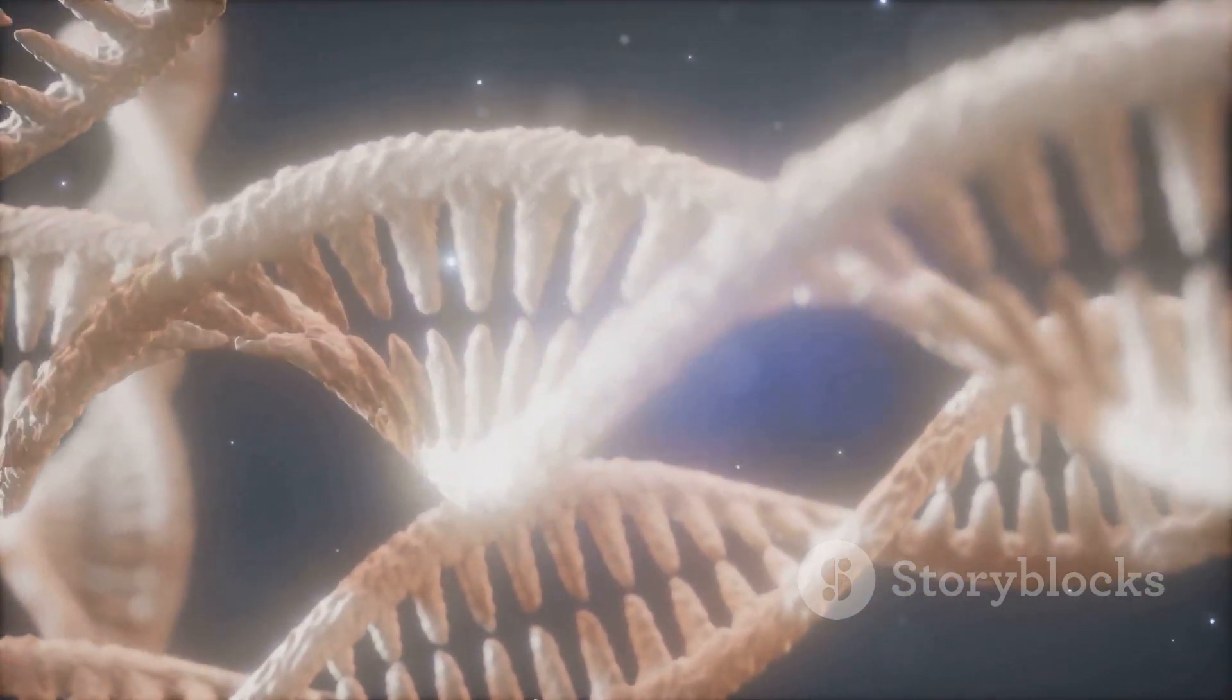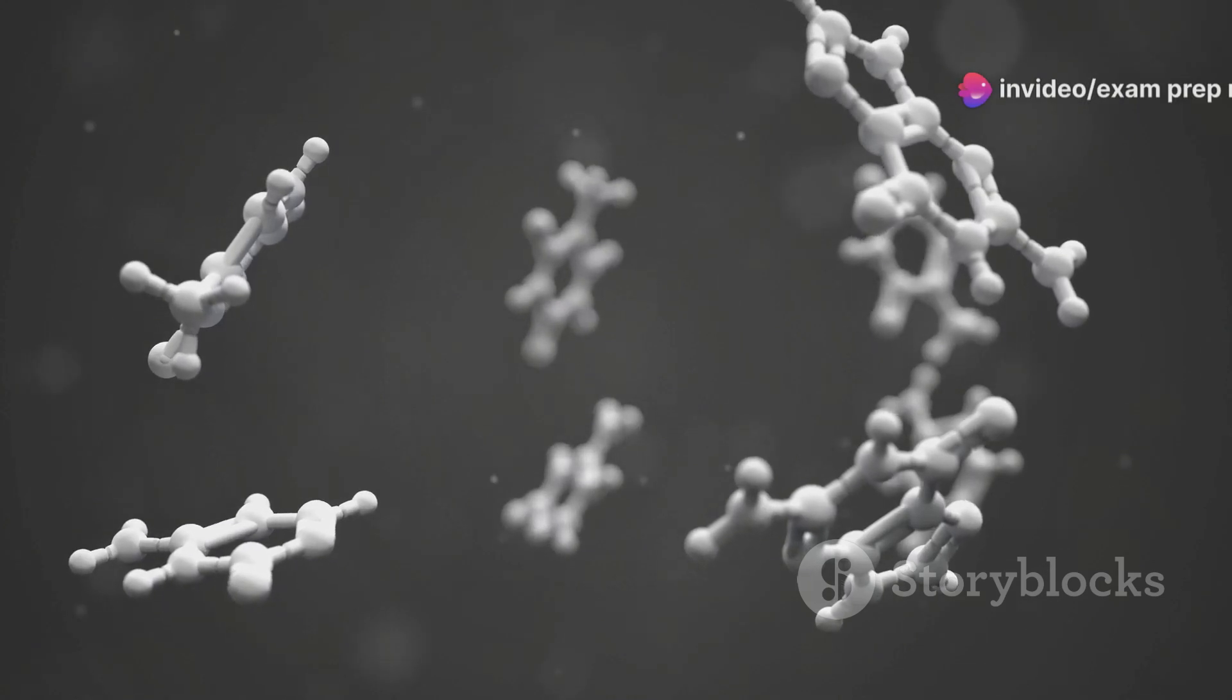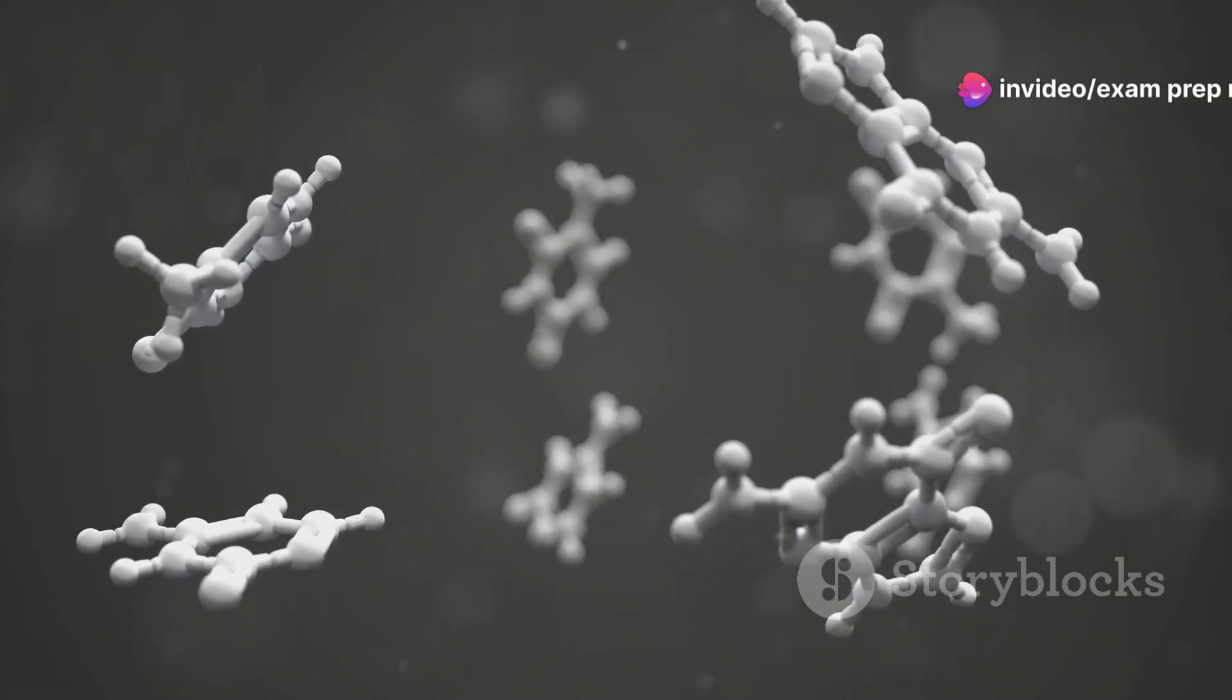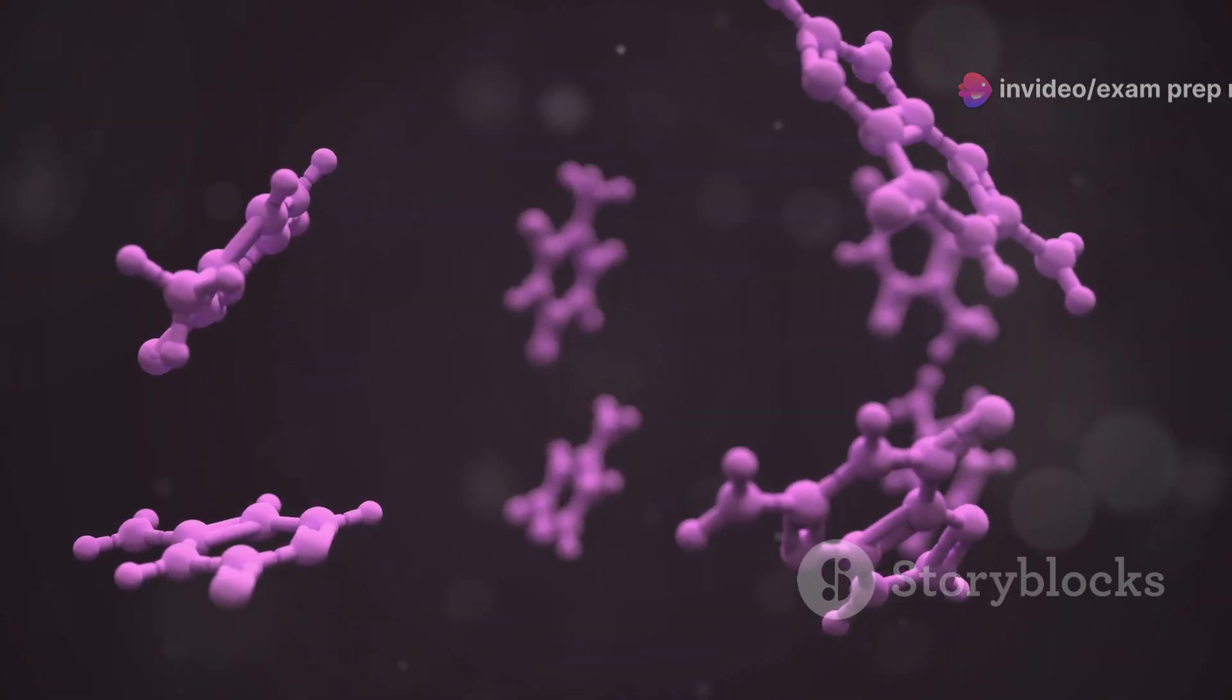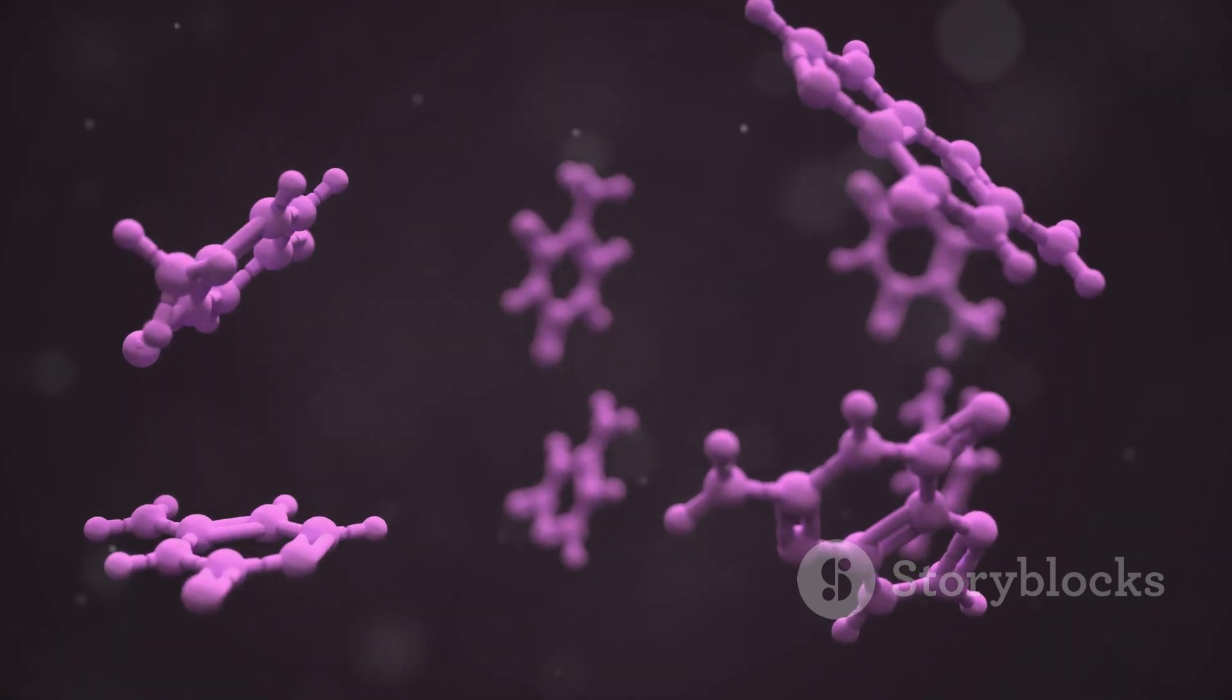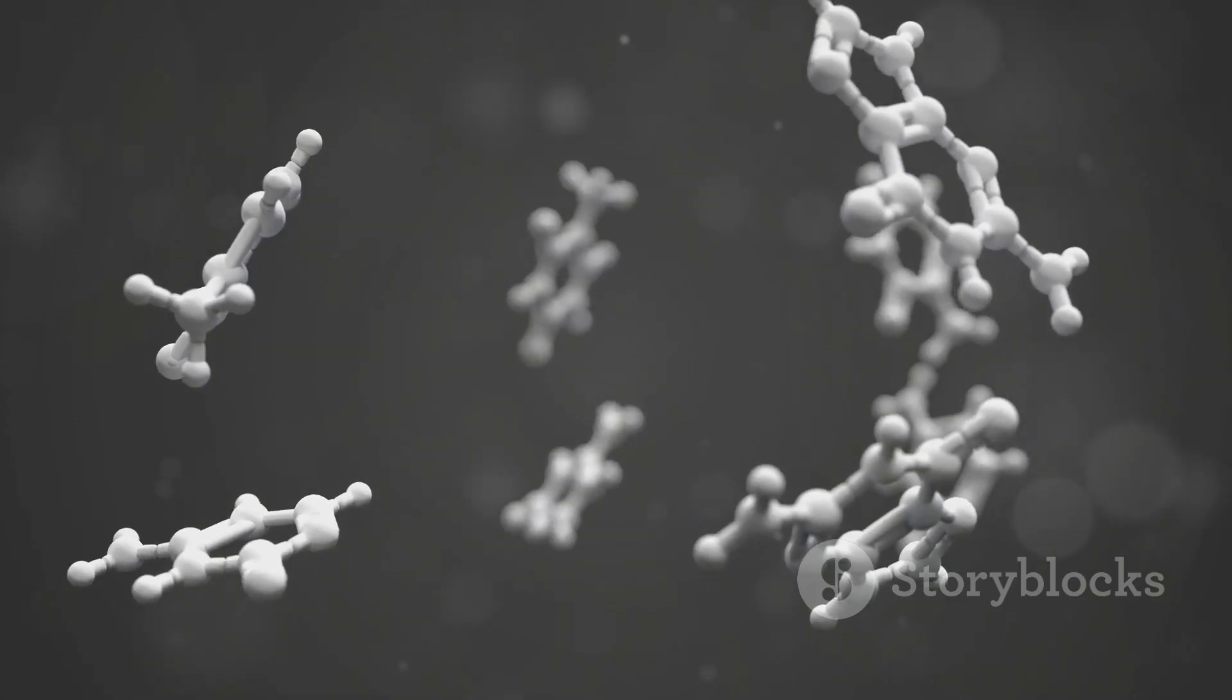Structurally, RNA is similar to DNA but with a few key differences. RNA is typically single-stranded, meaning it consists of a single chain of nucleotides. Instead of thymine (T), RNA uses the base uracil (U), which pairs with adenine (A). Think of uracil as thymine's substitute in the RNA world.